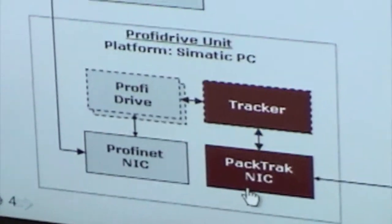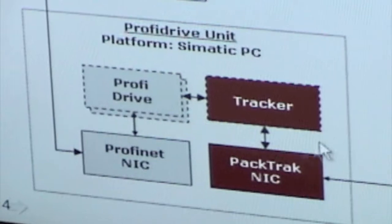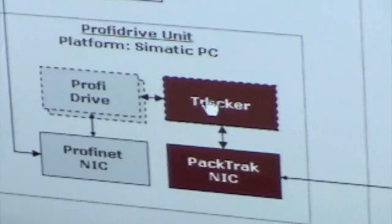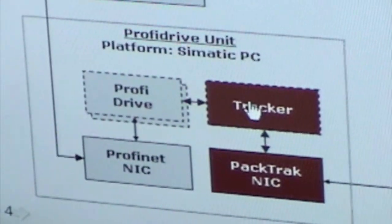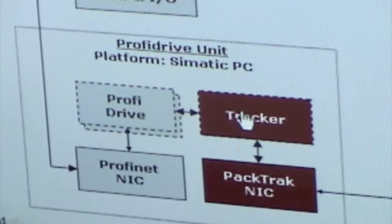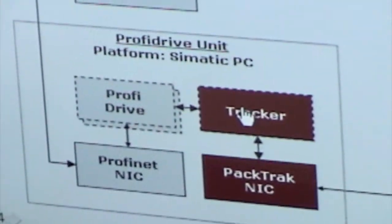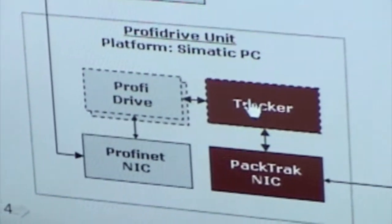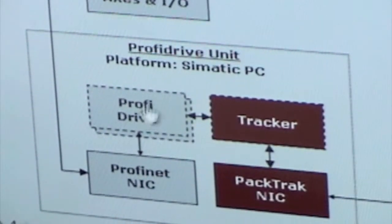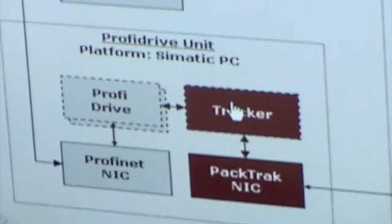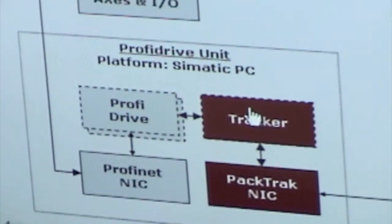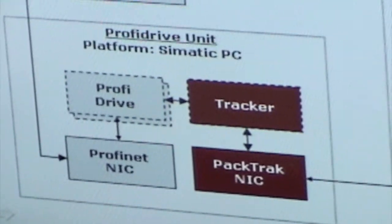Everything in red is the stuff that we've done — that's PacTrack. We also have a function in there called Tracker, which is basically a drive virtualizer. Since we've got five axes and four drives, the old one-drive-one-axis model doesn't work out. So ProfiDrive is talking to five axes — it thinks it's talking to five drives. The Tracker is basically a traffic cop that says axis one is on drive three at the moment, and it shunts it to the correct location.